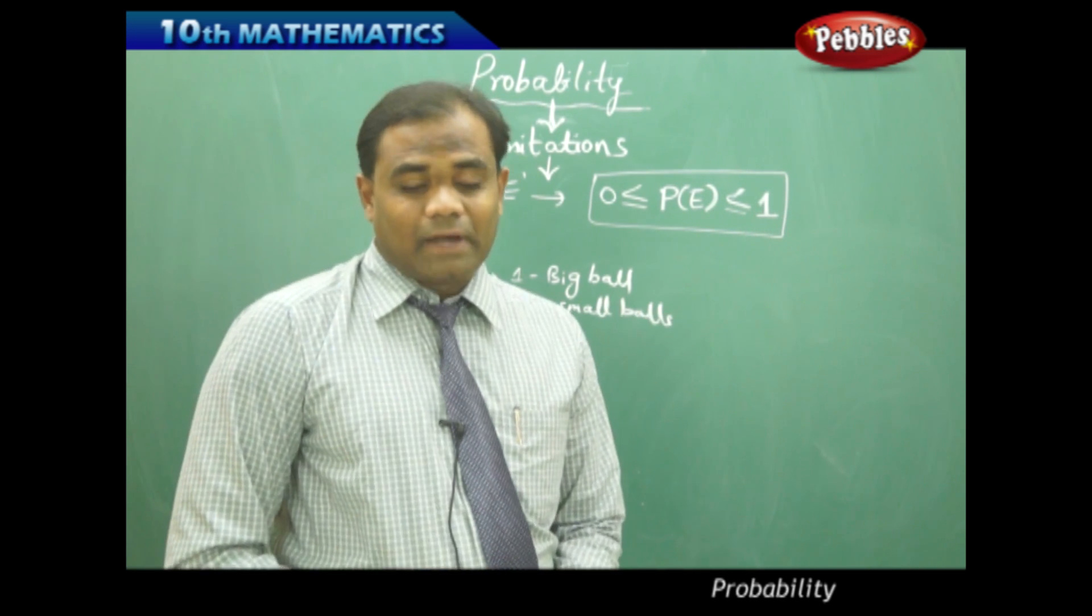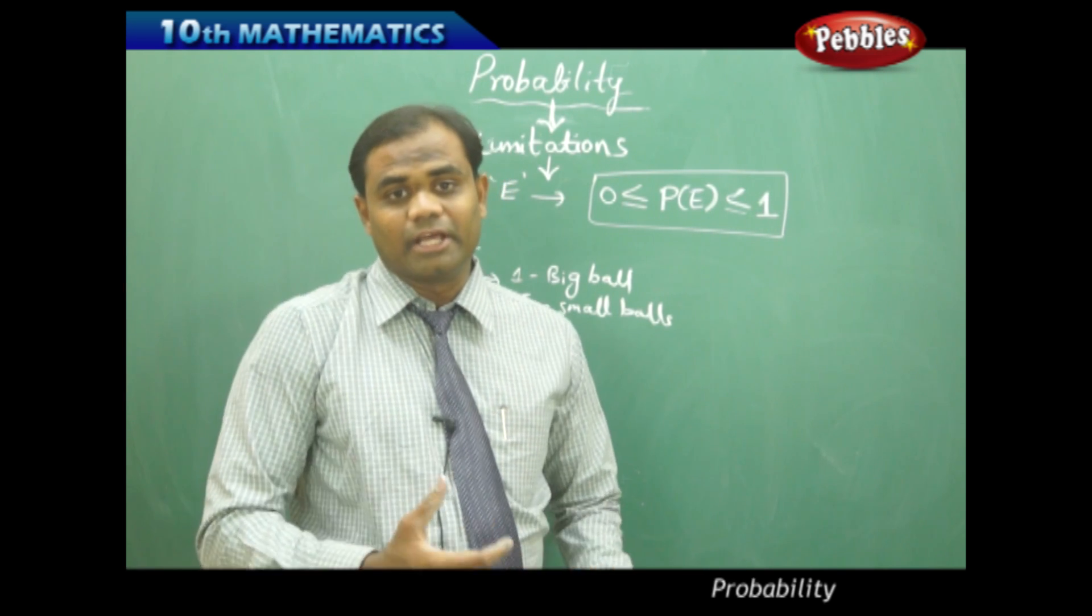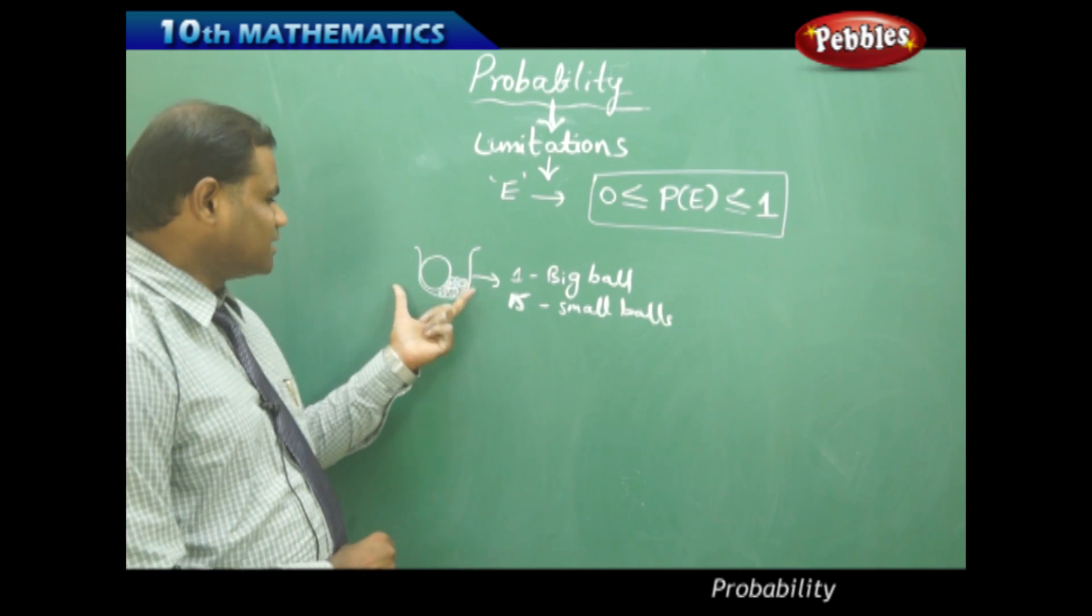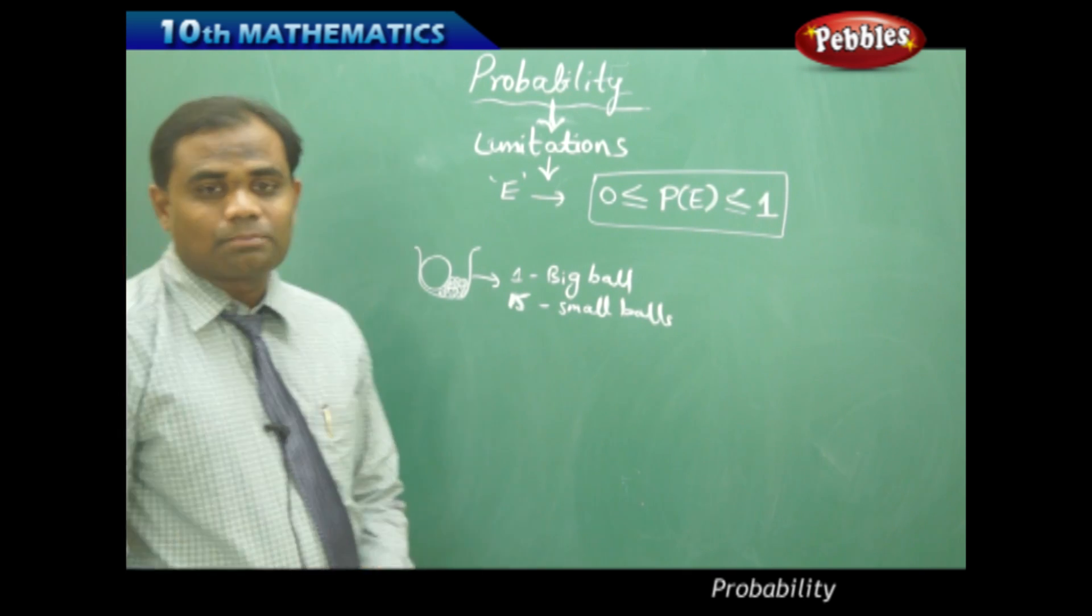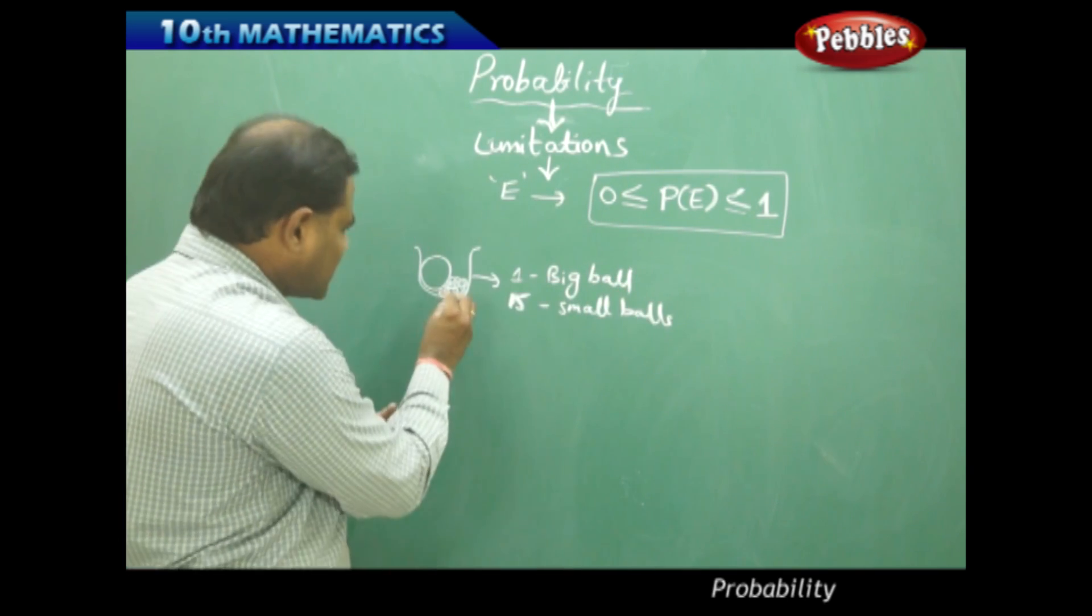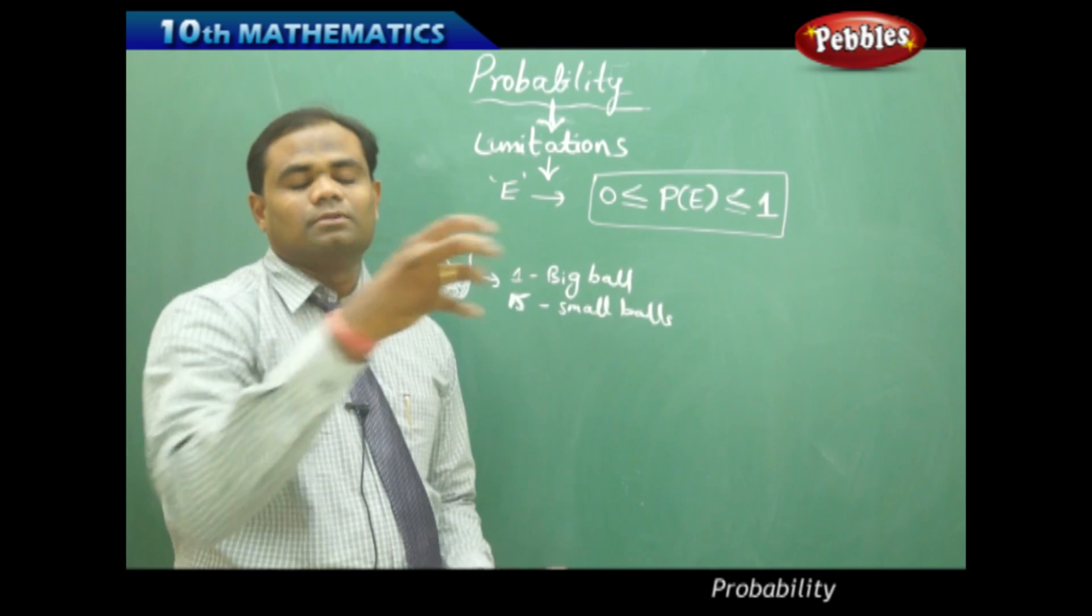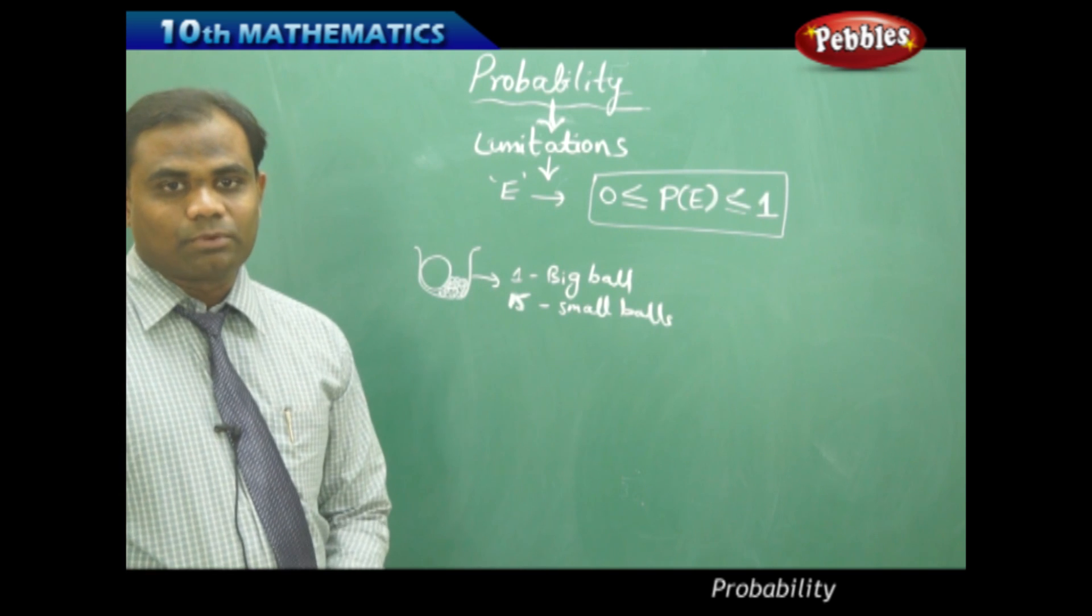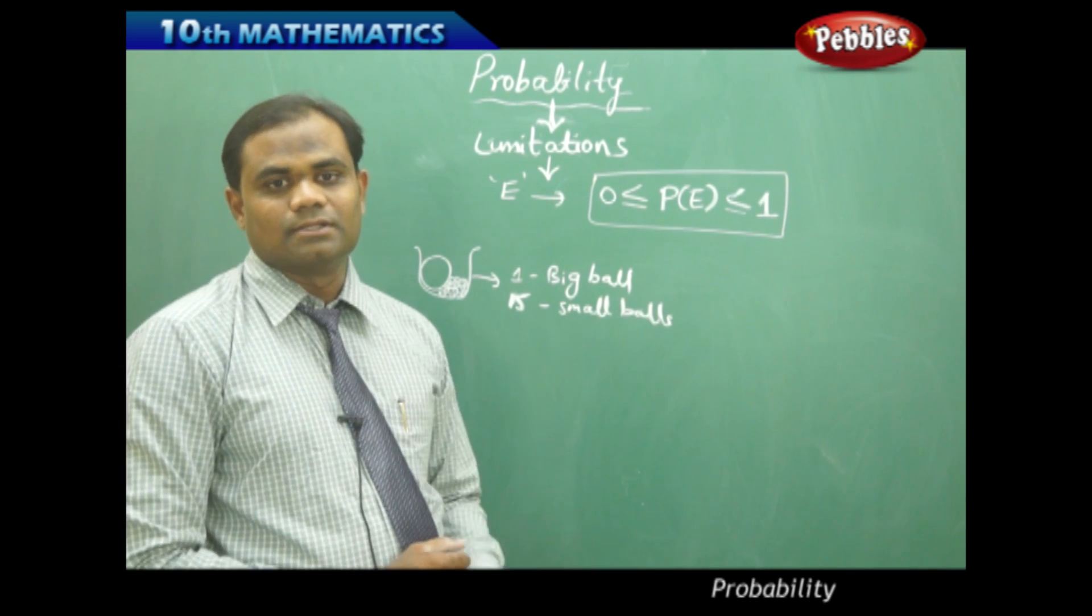If I apply probability to this kind of problem, I have to search for limitations in defining probability. In this bag containing 1 big ball and 15 small balls, what is the probability of picking the big ball? It's easy to remove the big ball from the bag. We cannot expect any probability or chance here because the event is certain in this example.